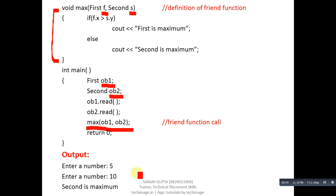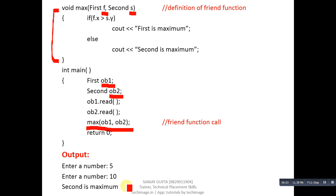You can also see the output: enter a number — five; enter a number — ten. After entering the two numbers, since ten is larger, it prints 'second is maximum'.